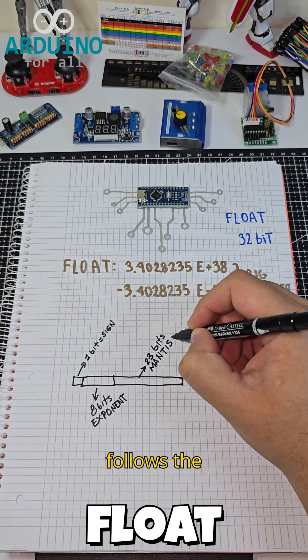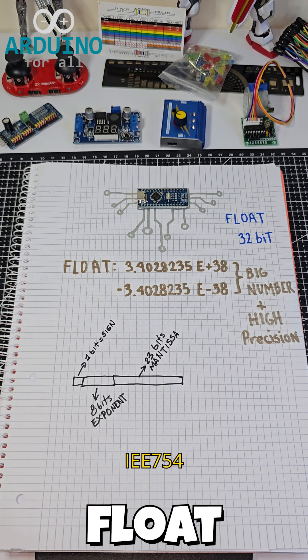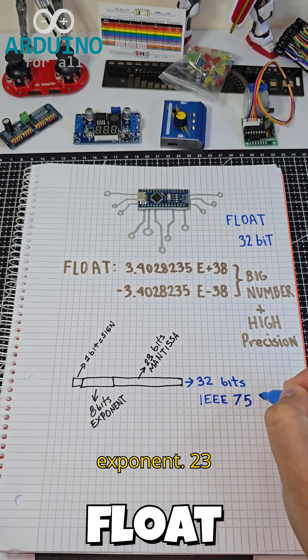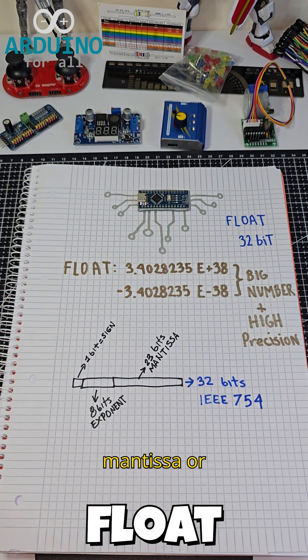Its structure follows the IEEE 754 standard: 1 bit for the sign, 8 bits for the exponent, 23 bits for the mantissa, or fraction.